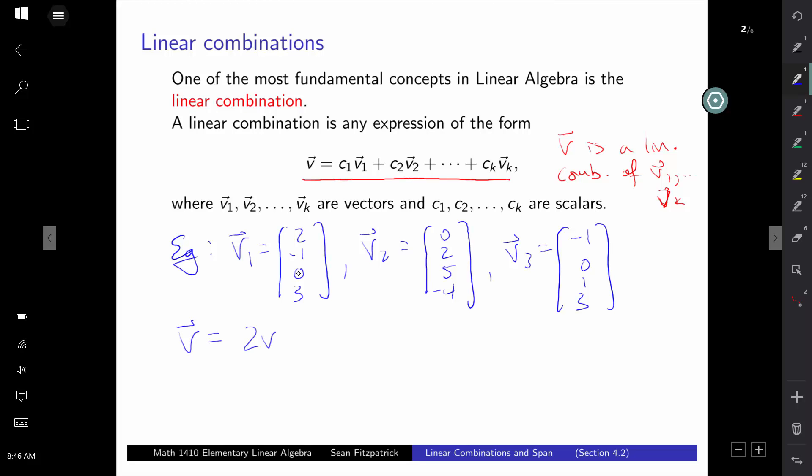So a linear combination could be something of the form V = 2V1 - 3V2 + 4V3. The 2 here is like your c1, the -3 is your c2, and the 4 is your c3 in this case. And of course, you can simplify this expression. 2 times V1 would be (4, -2, 0, 6), minus 3 times V2 would be (0, -6, -15, 12), and 4 times V3 would be (-4, 0, 4, 12).